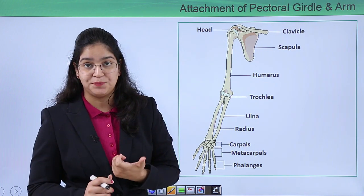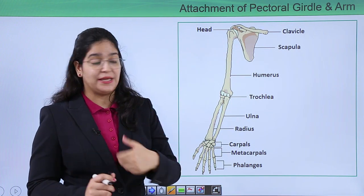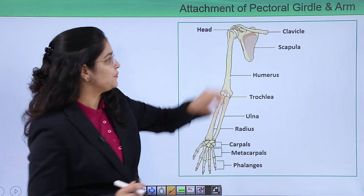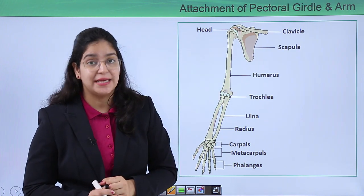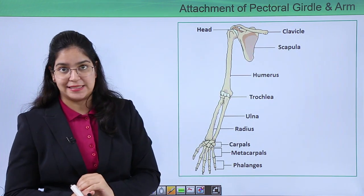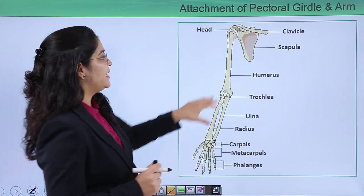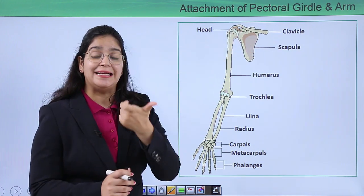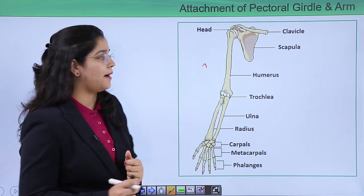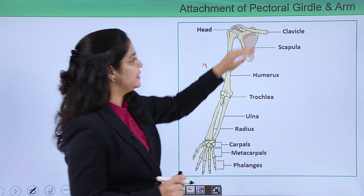Our appendicular skeleton system contains limbs. Our limbs are connected through the axial skeleton via the pectoral girdle. This is the pectoral girdle which connects our limb to the axial skeleton system. In the earlier video we have already talked about the pectoral girdle, but here I am showing it again so that you can learn the connection between the pectoral girdle and the arm.